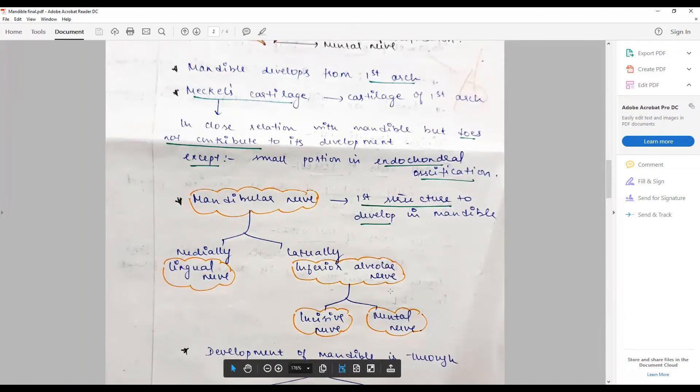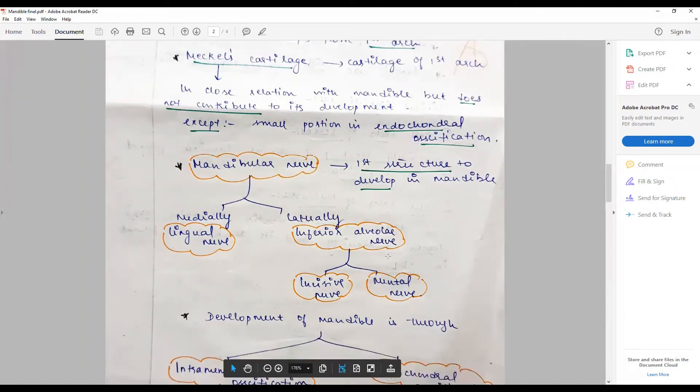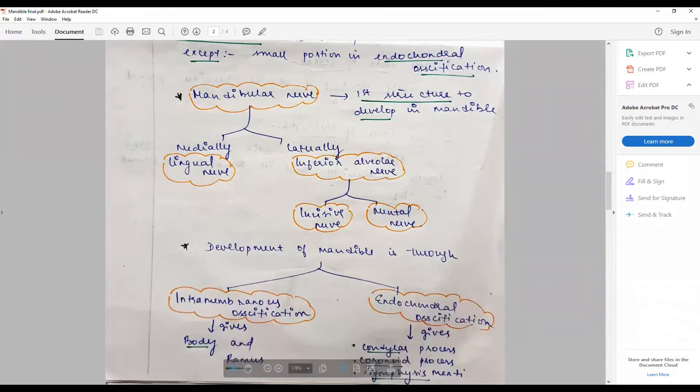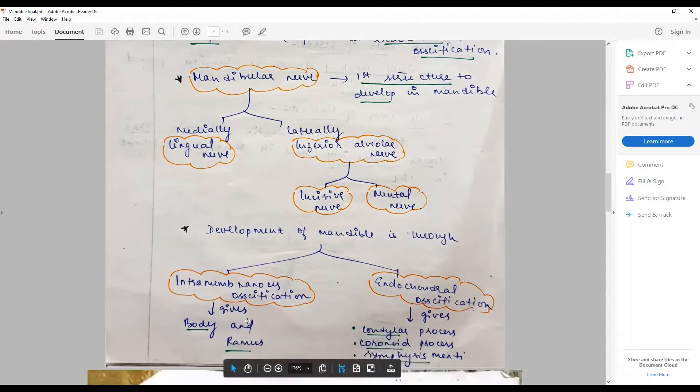The pathway in which the mandible starts to develop - development of mandible is through both intramembranous and endochondral ossification, though the former is more common. The intramembranous ossification gives rise or contributes to the body and ramus, the majority part of the mandible.